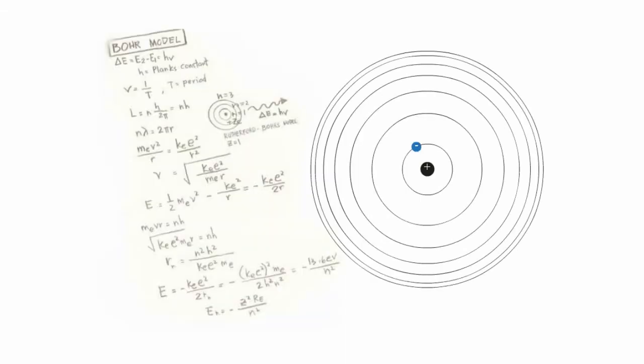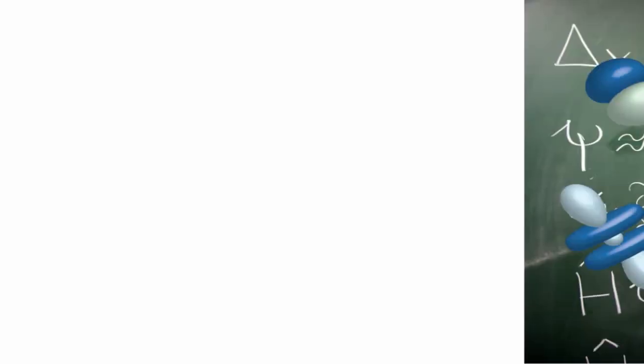However, Bohr's model was flawed. It turns out that electrons have wave-particle duality, and we cannot know an electron's position and velocity at the same time. Because we cannot know both of these things simultaneously, it is impossible to predict an electron's exact trajectory.